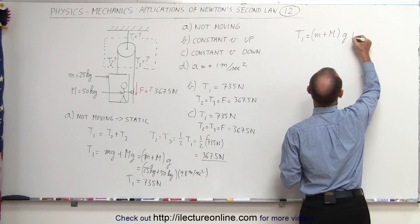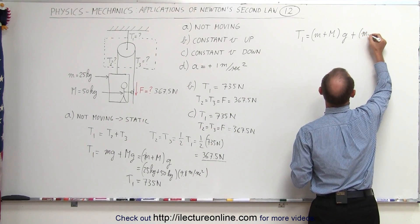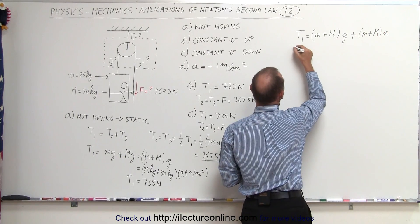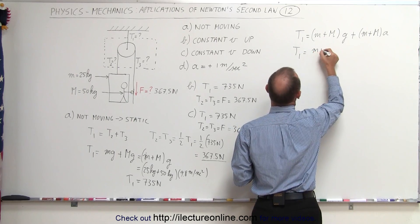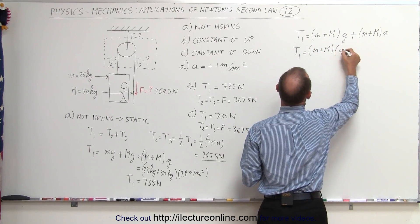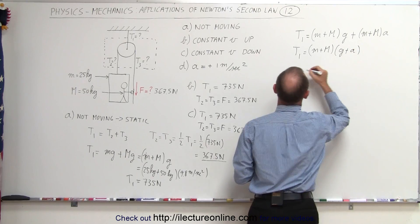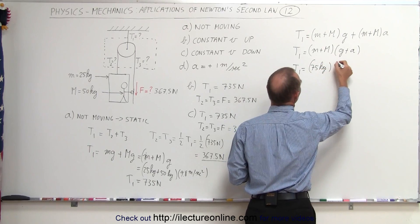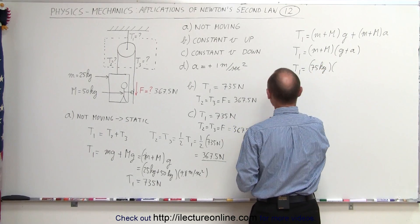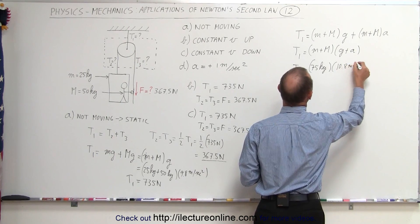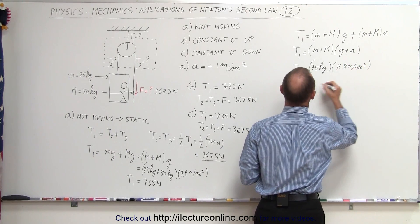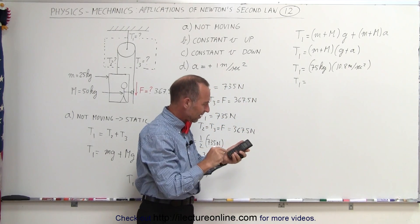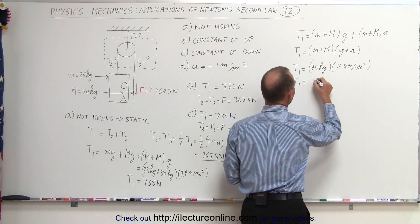T1 = (m + M)(g + a) = 75 kilograms × (9.8 + 1) = 75 × 10.8 = 810 newtons.